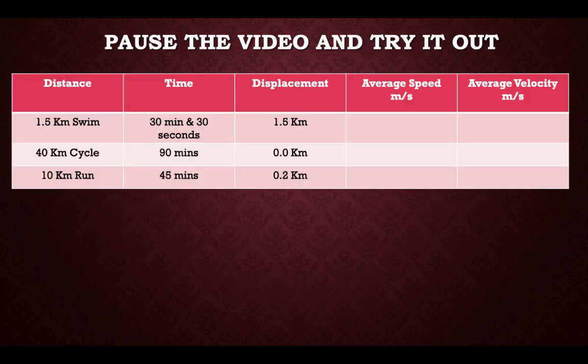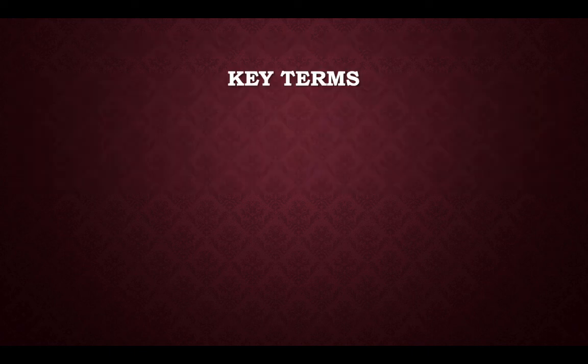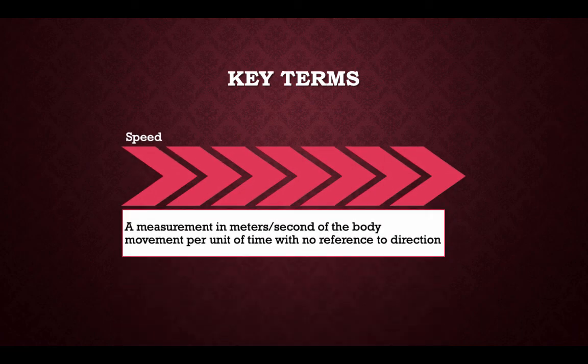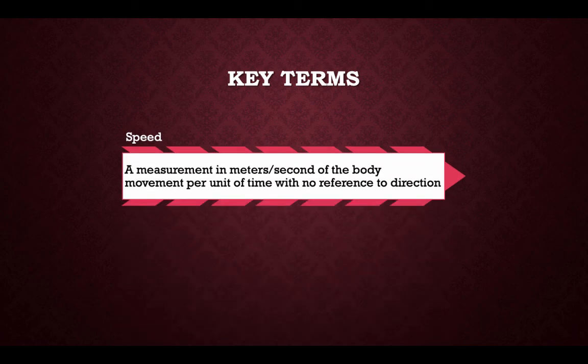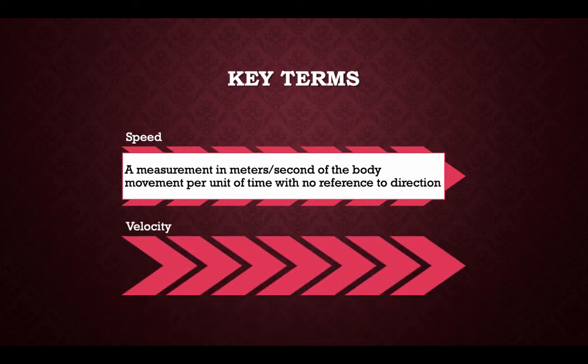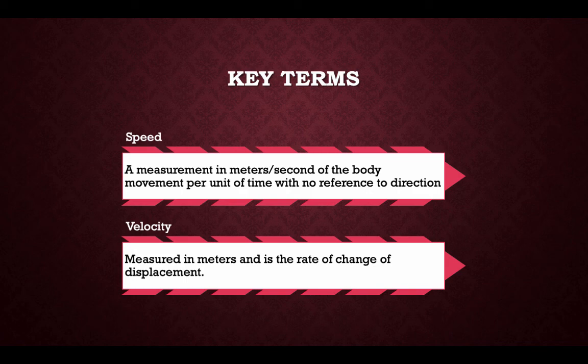Pause the video and try it out: using the calculations from the previous slide, work out the average speed and average velocity of the swimmer, the cycle and the run as part of this triathlon. Key terms — speed: a measurement in metres per second of a body's movement per unit of time with no reference to direction. Velocity: measured in metres per second, it is the rate of change of displacement.